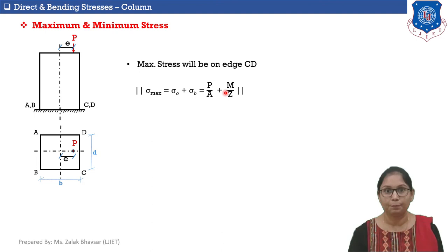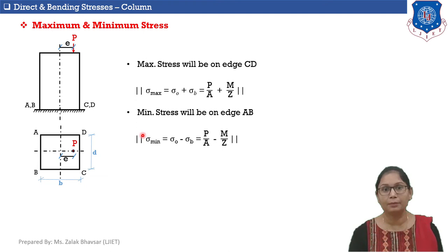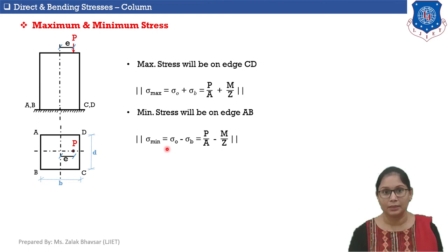Edge AB will be subjected to minimum stresses. σmin = σ₀ − σB = P/A − M/Z.